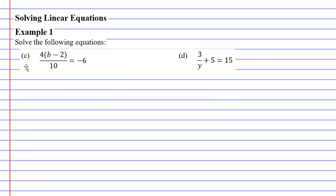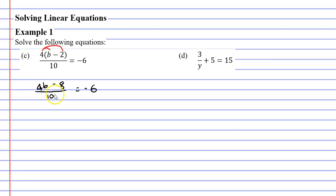Moving on to question C. One of the tips I mentioned earlier was that brackets are a pain to work with, and as soon as you see brackets you should expand them straight away. We're going to multiply the 4 by the B and the 2: 4 times B is 4B, and 4 times 2 is 8. This is all over 10 and it equals negative 6.